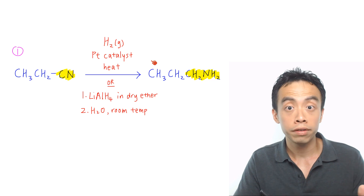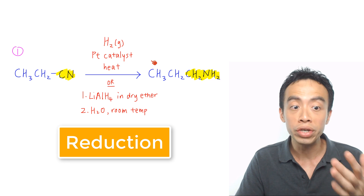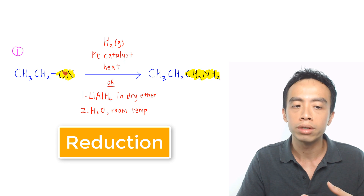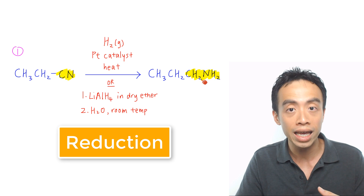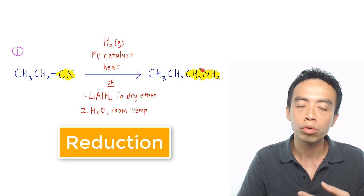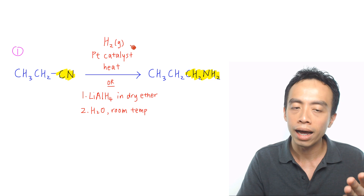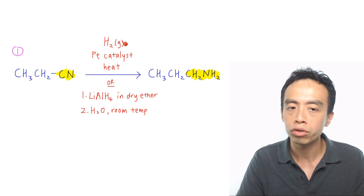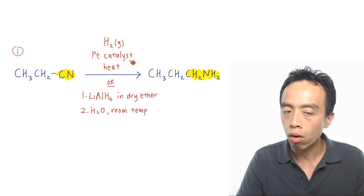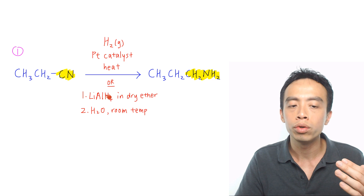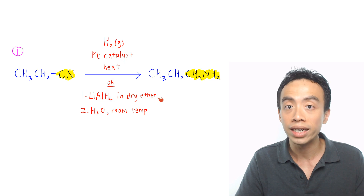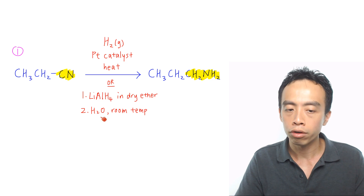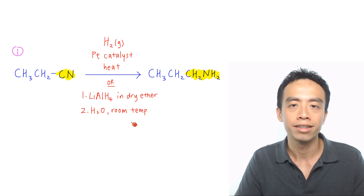Now the first must-know reaction of nitrile is the reduction of our nitrile to form a primary amine. This is done either using H2 gas with a platinum catalyst and heat, or using lithium aluminium hydride in dry ether followed by water at room temperature.